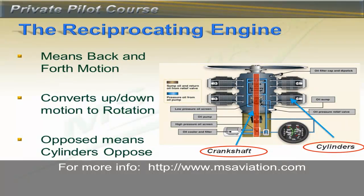Here is a top view of the engine we saw on the previous slide. The term reciprocating means a back and forth motion. If you look at each of the cylinders, you can imagine them as a housing or case that contains a moving piece that goes up and down — this is called a piston. The red bar in the middle is a shaft connected to the pistons that takes their up and down motion and converts it into a rotation.